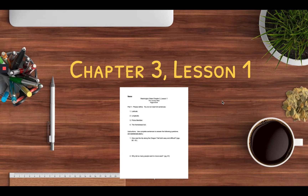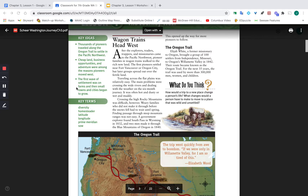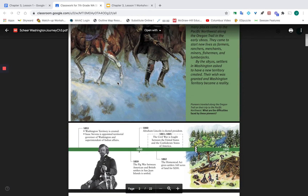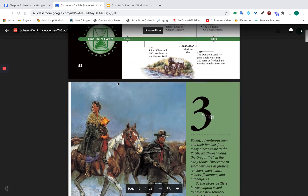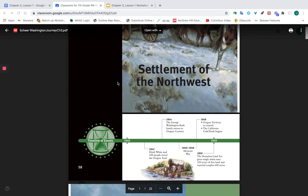This will be a real short video today, just letting you know that it is a worksheet lesson. We're covering pages 60 through 64 in Chapter 3. And just as a reminder, you access your book through the digital classroom. Chapter 3 looks like this — Settlement of the Northwest.